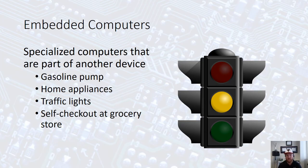Things like your cars or a gasoline pump, home appliances, traffic lights, self-checkout at your grocery stores. All of those use computers to use that process cycle to give us the information that we need.